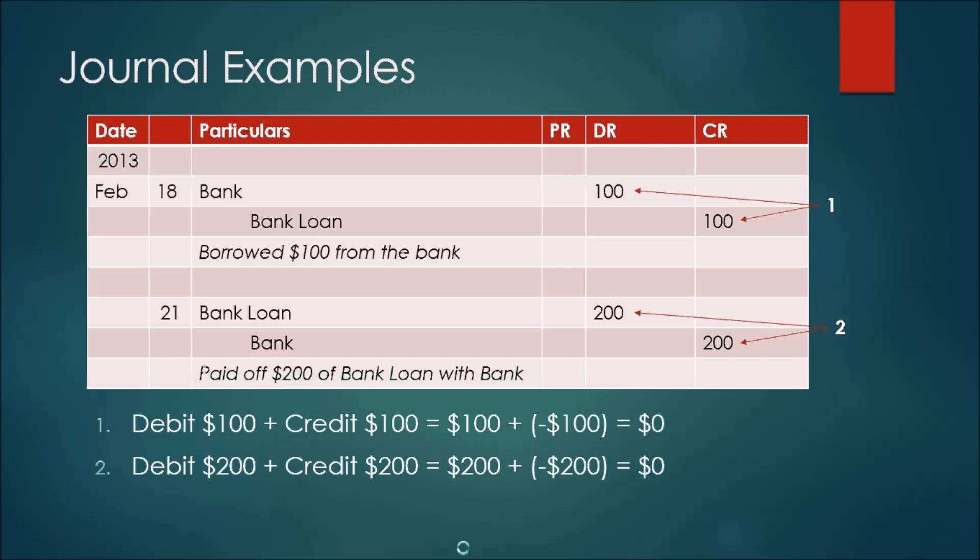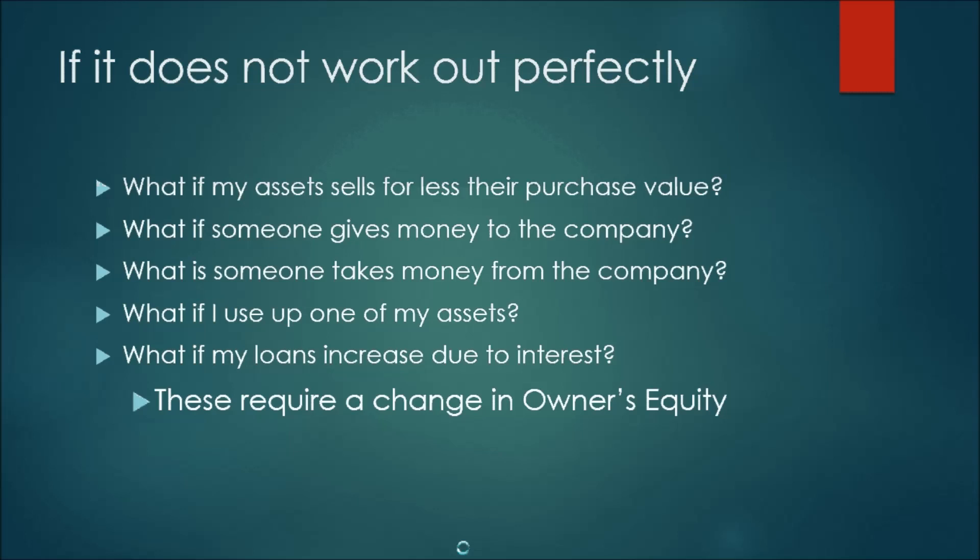If you add all the debits up and all the credits up in your journal, those two should always balance — $100 plus $200 still equals $200 on each side. If they don't balance, that means something is wrong with one of your transactions. There are certain occasions where owner's equity will need to be changed, and just modifying assets and liabilities won't create a balanced journal or balance sheet — but that I'll look at in the next tutorial.